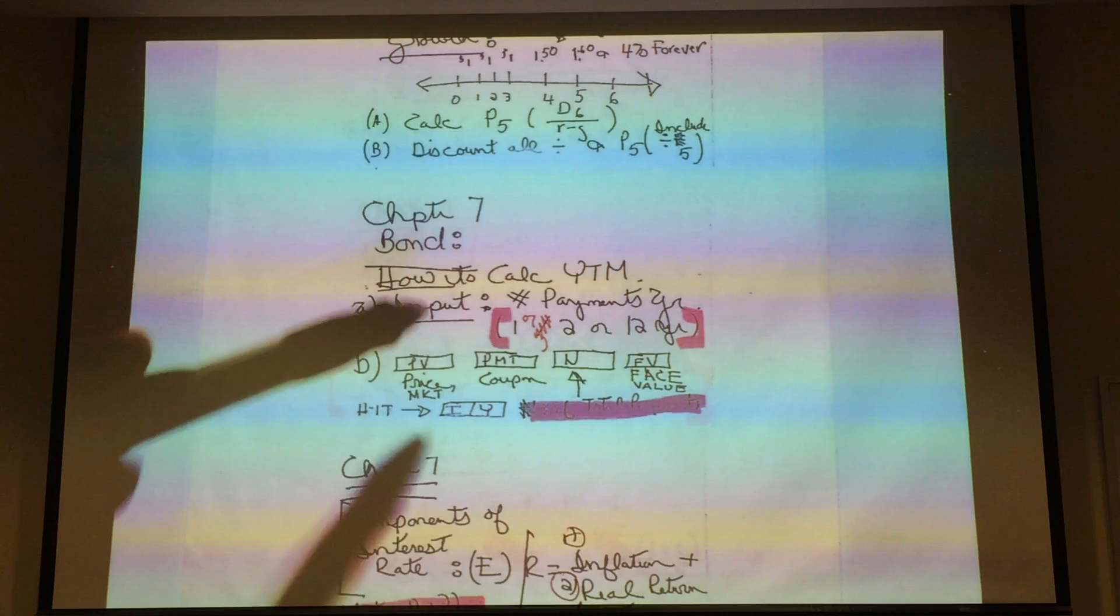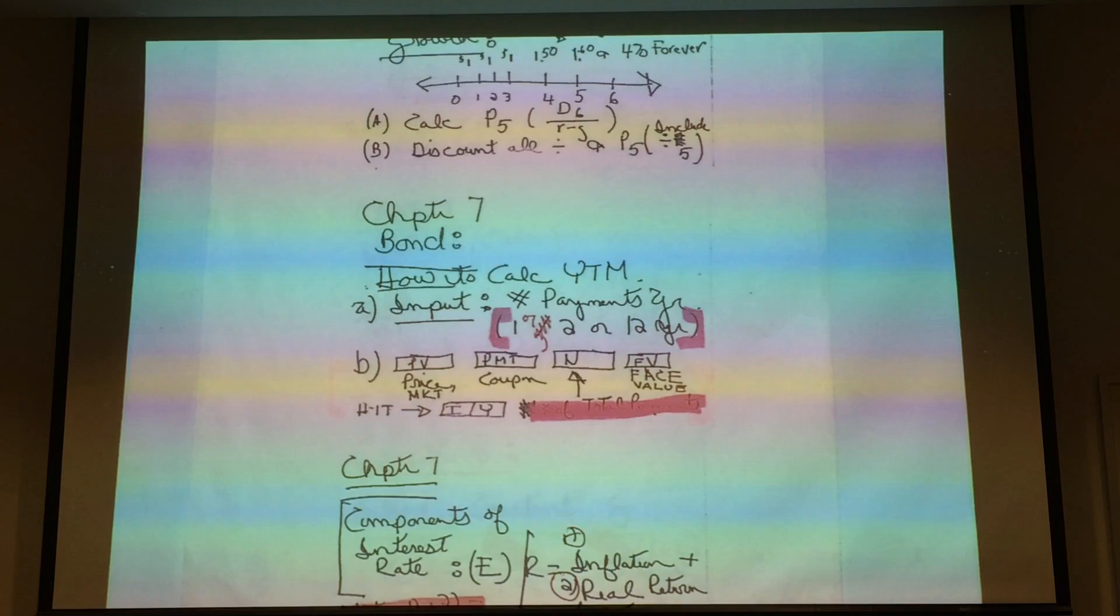Chapter 7, you're going to have to know how to calculate a yield to maturity. Given a bond that has payments, unless it tells you otherwise, the payments are twice a year with the bond.